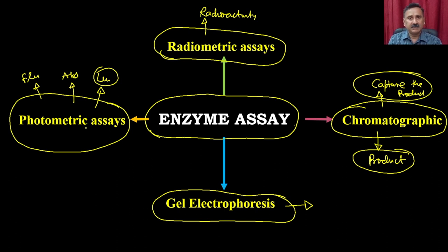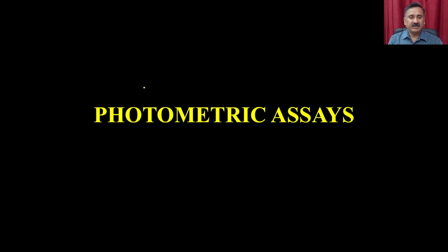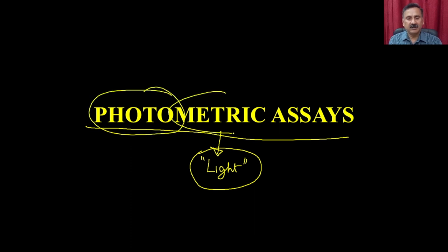Let's start with photometric assays and discuss different aspects — what precautions you should take, and how UV-visible spectroscopy and fluorescent spectroscopy can be exploited for photometric assays to measure enzyme activity. Photometric assays, as the name suggests, mean you are going to see something related to light. Photo means light, metric means measuring — so you are doing light measurements.